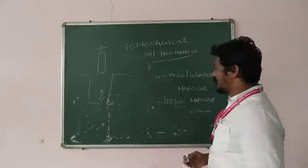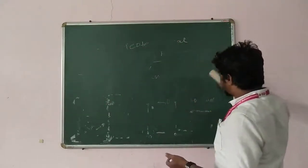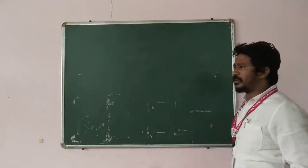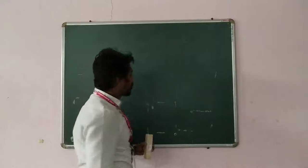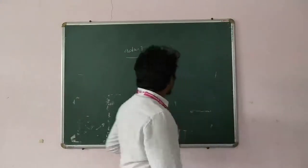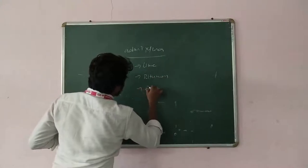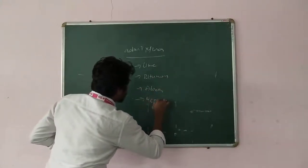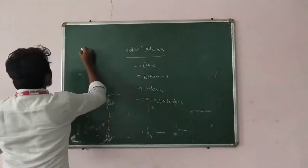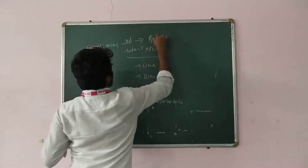That is the reason, in this loose material we have to add some additives. We are adding different kinds of materials into the soil — whether it is black soil or laterite or murram, any type of material. We have to add additives such as lime, bitumen, fiber, or geosynthetic materials. Using these many types of materials we have to strengthen the soil, meaning we improve the soil properties.